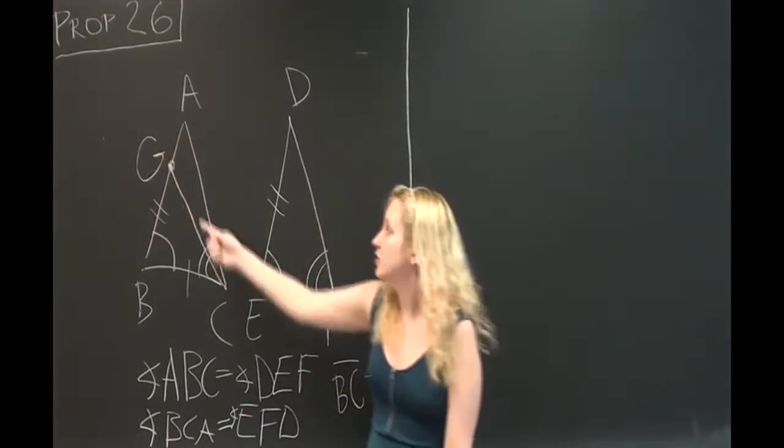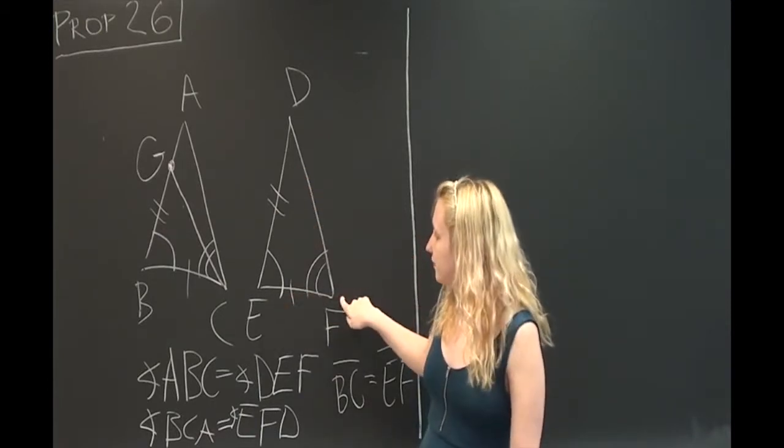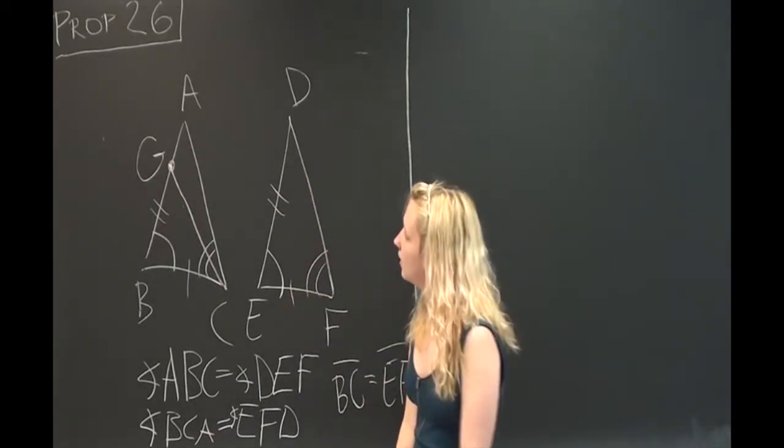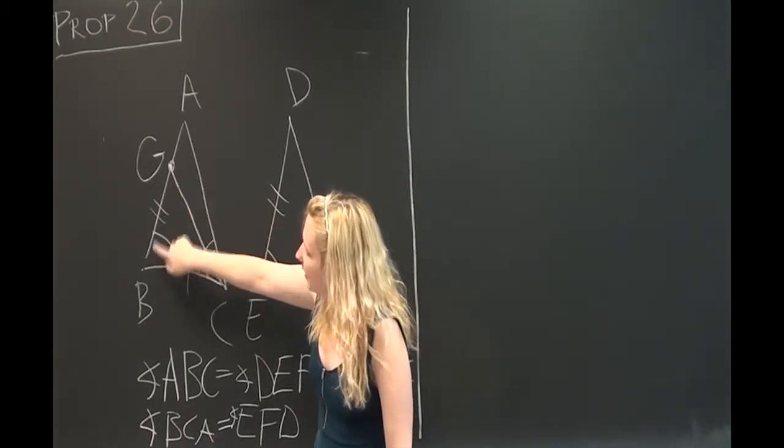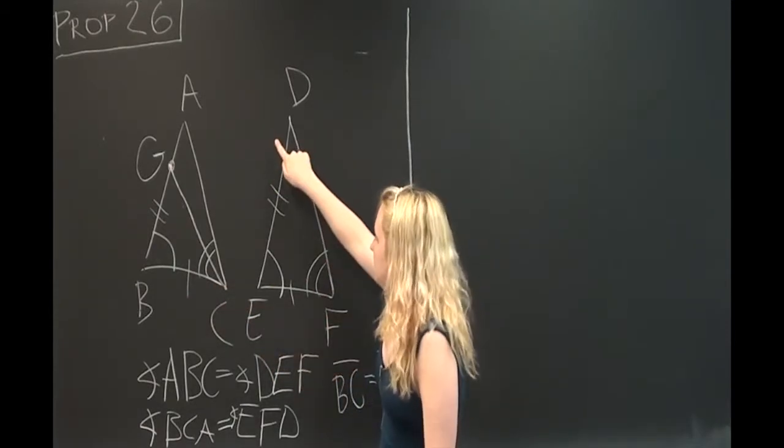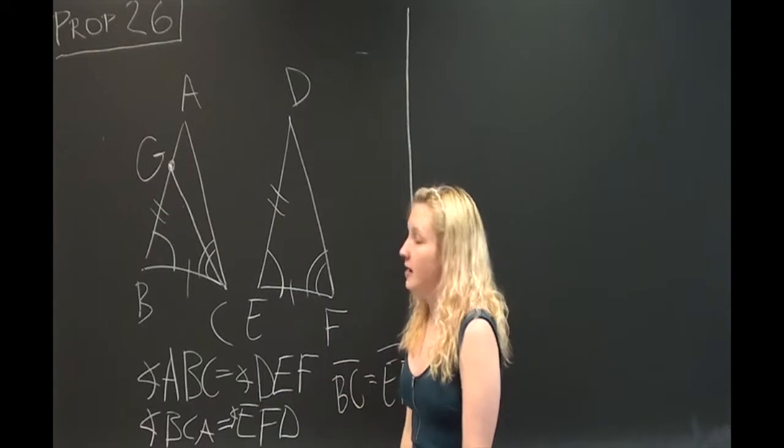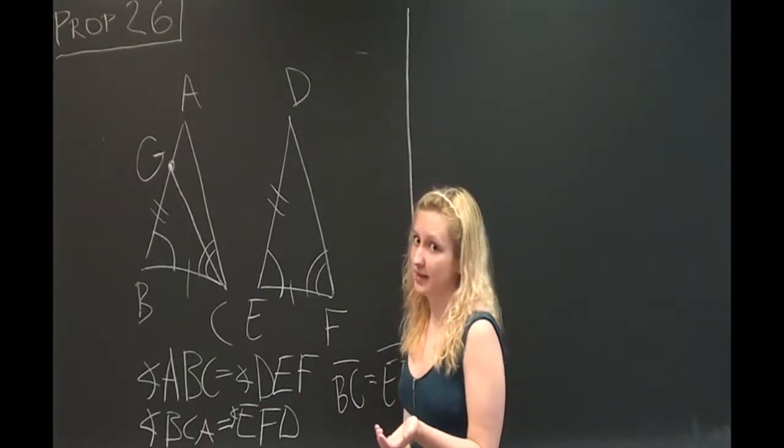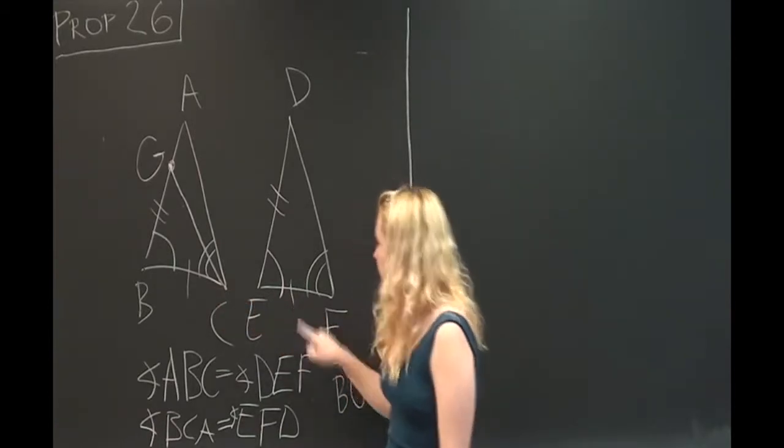So that we have a new triangle GBC equal to the triangle DEF. And we can say they're equal because they have the line GB, the angle GBC, and the line BC equal to the line DE, the angle DEF, and the line EF. We learn that if triangles have side, angle, side equal in Proposition 4, then both triangles are equal.